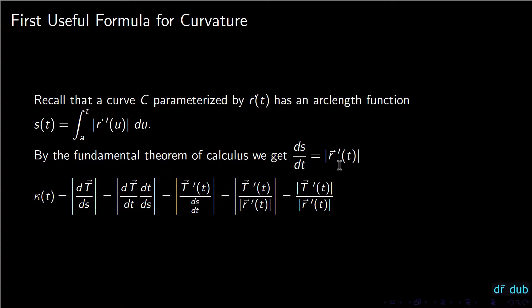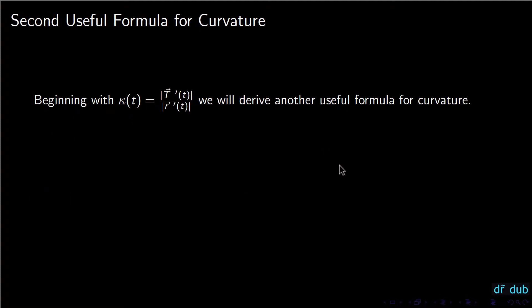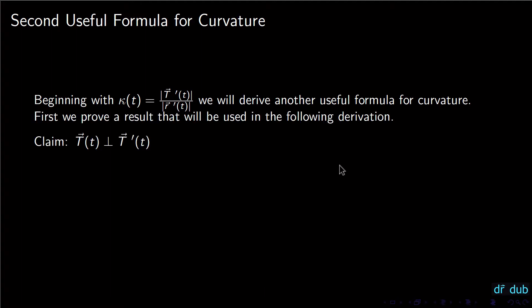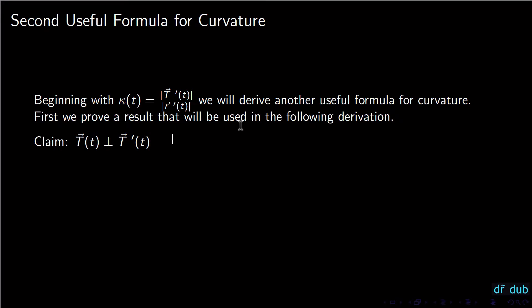So that's our first useful formula for curvature: κ = |T'| / |R'|. That's a good formula for calculating the curvature of a space curve. Now let's derive a second formula, just in case this one is difficult to apply. Before we can derive it, we first need to show that the unit tangent vector is always perpendicular to its derivative.